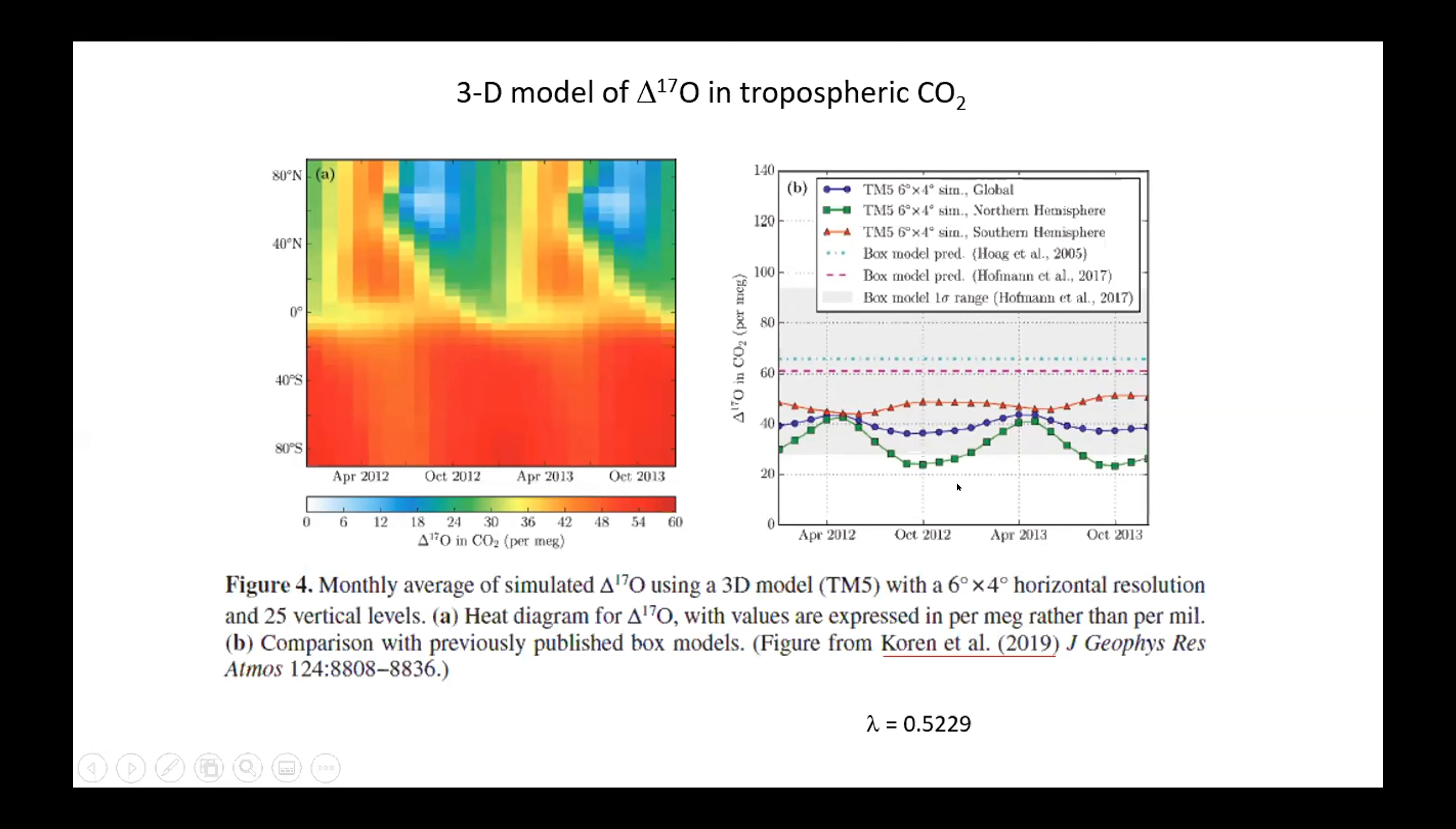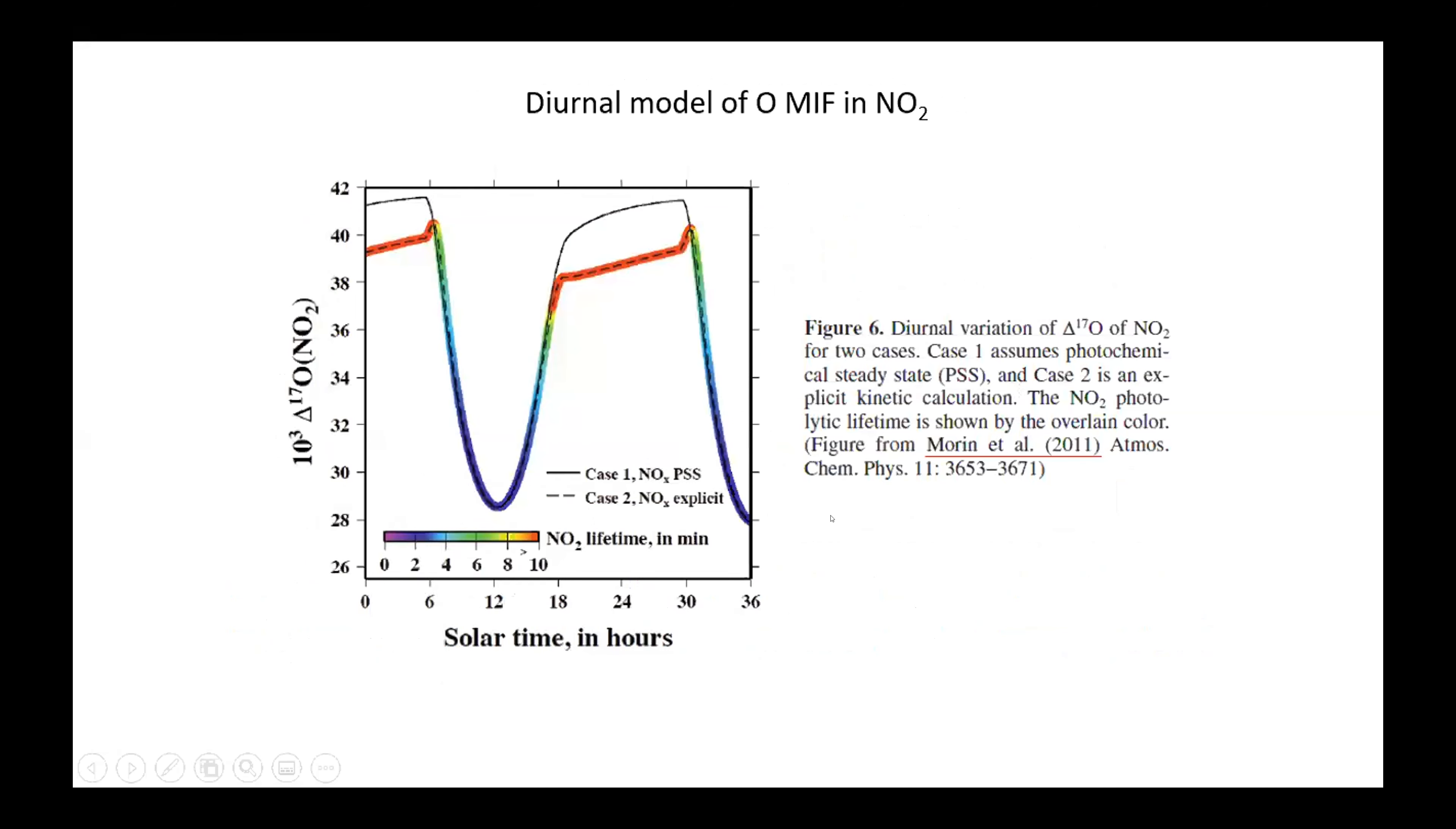And this is a 3D model. Now this one is from Koren et al, that's Thomas Rockmann's group again, and they did a full 3D model of these processes showing the hemispheric variation, seasonal variation in the northern hemisphere versus typically a much weaker variation in the southern hemisphere. And the values have come down a bit. They're using a different lambda, but same idea.